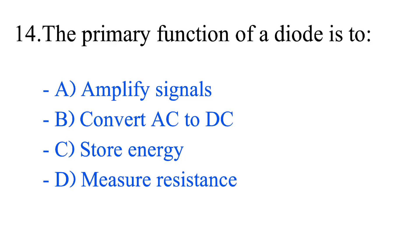Question number 14. The primary function of a diode is to: option A, amplify signals; option B, convert AC to DC; option C, store energy; option D, measure resistance. The correct answer is option B, converts AC to DC.